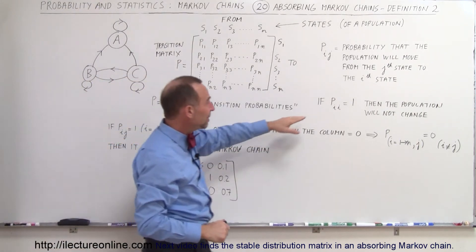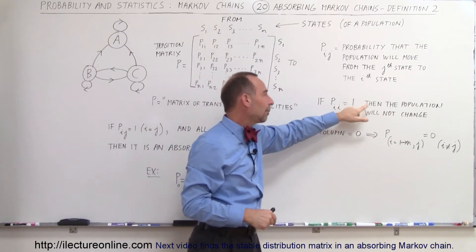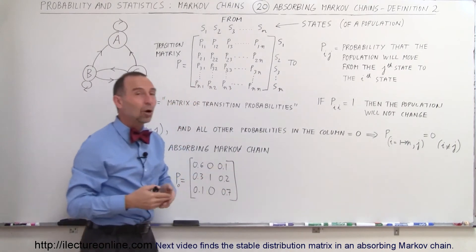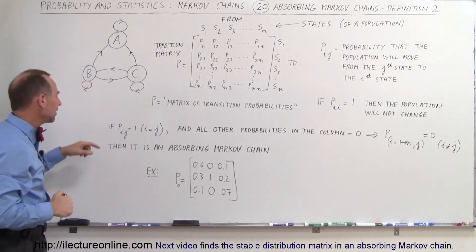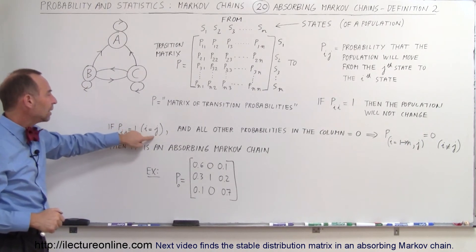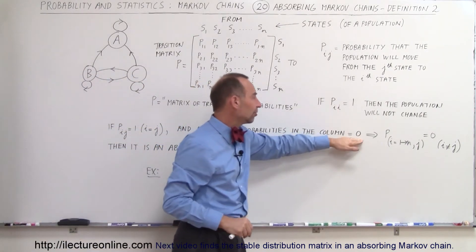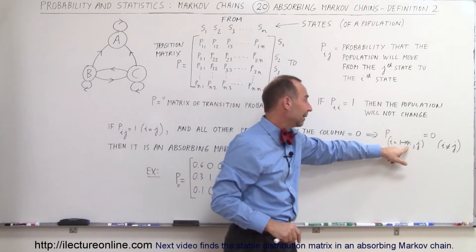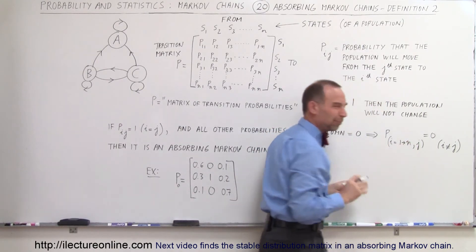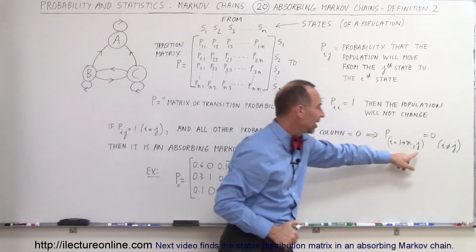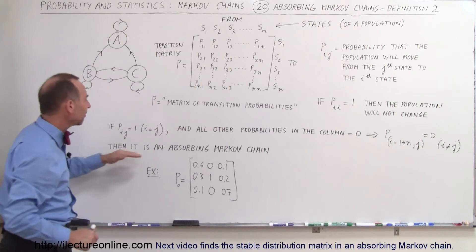Also notice: if Pii equals one — so if i and j are the same number and it equals one — then the population will not change, which means all the other elements in that column will be zero. Mathematically, if Pij equals one with i equal to j, and all probabilities Pij from one to n equal zero with i not equal to j — for that same column — then we have an absorbing Markov chain.